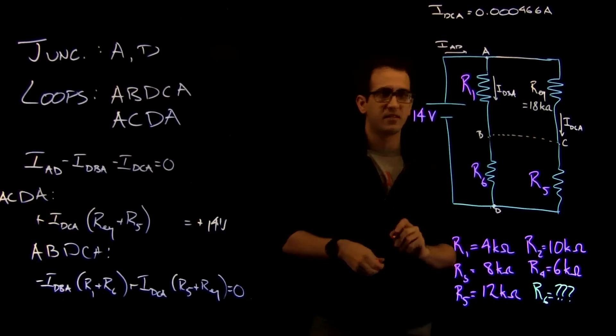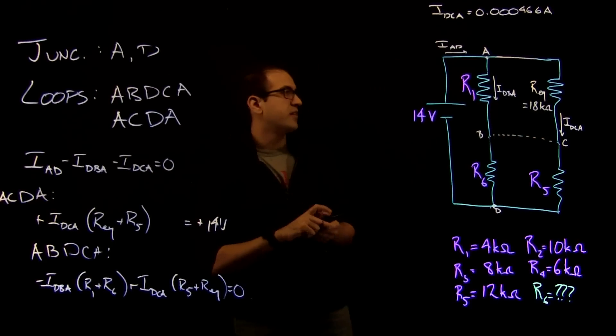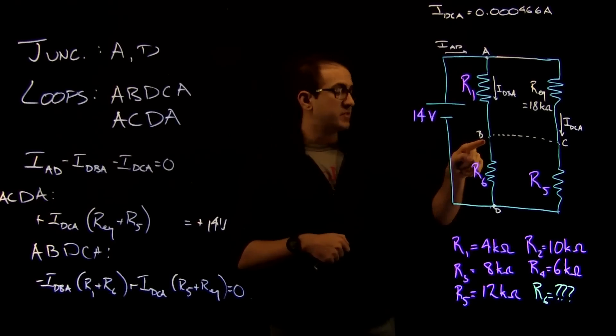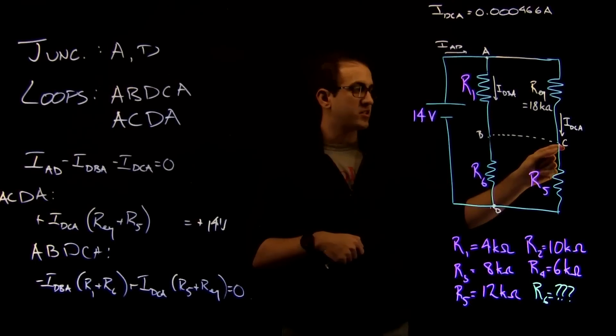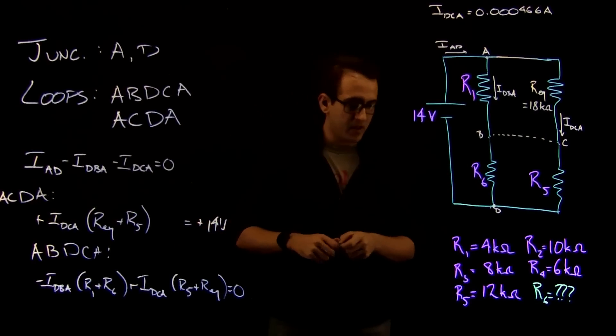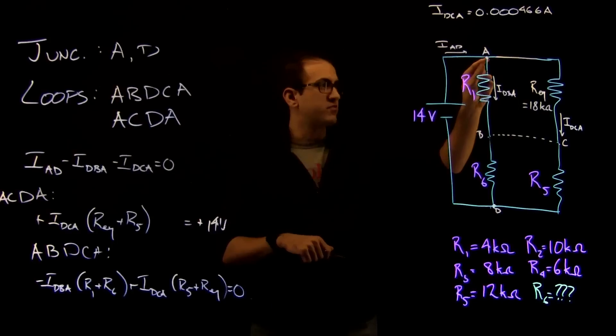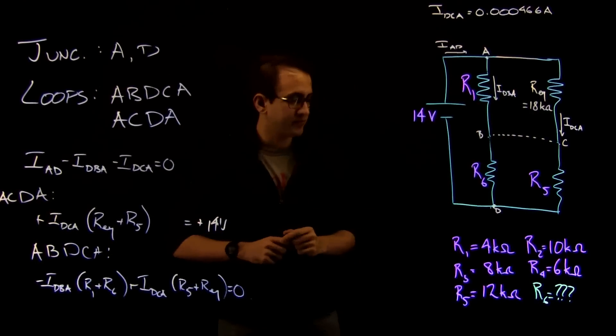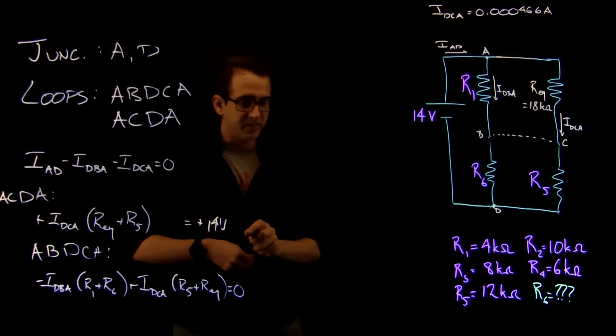So one thing we know is that no current flows from B to C. Remember, there used to be a connection there. So that says that the potential at B minus the potential at C is 0. They're at the same potential, which means the potential difference from A to B and the potential difference from A to C is the same.